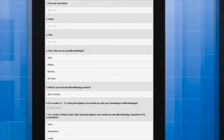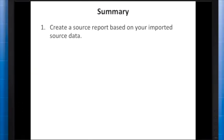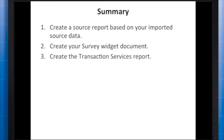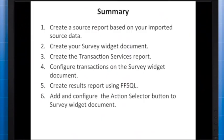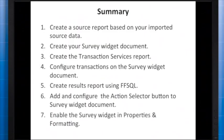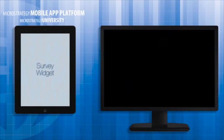Click OK again to close Properties and Formatting and save the document. At this point you can run the document on your mobile device. This is what our document looks like on the iPad. In summary, to create a simple survey you must: create a source report based on your imported source data; create your survey widget document; create the transaction services report; configure transactions on the survey widget document; optionally create a results report using freeform SQL; add the action selector button; and enable the survey widget in Properties and Formatting. That's a wrap for this MicroStrategy Mobile App Developer Academy course.